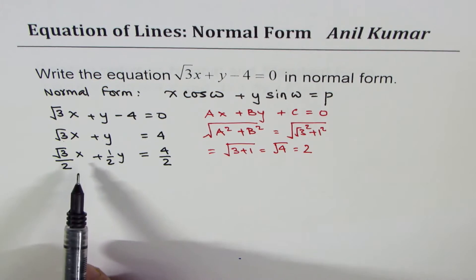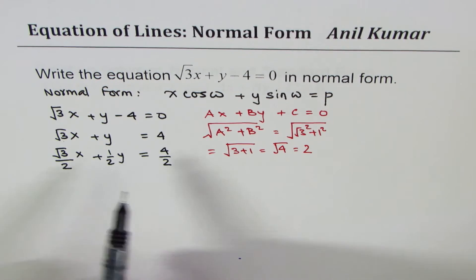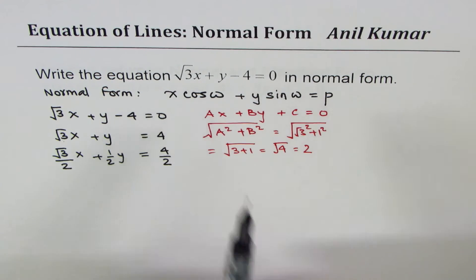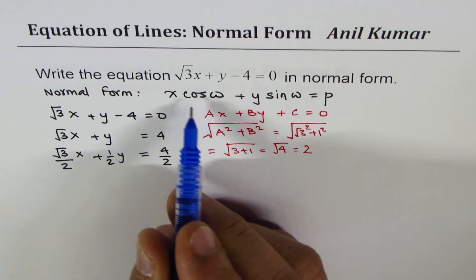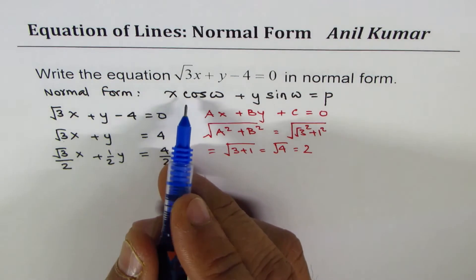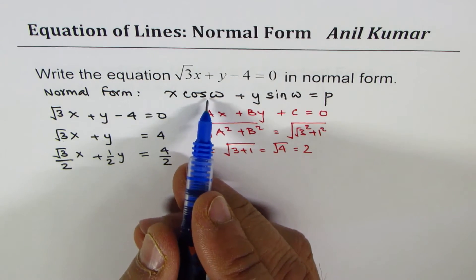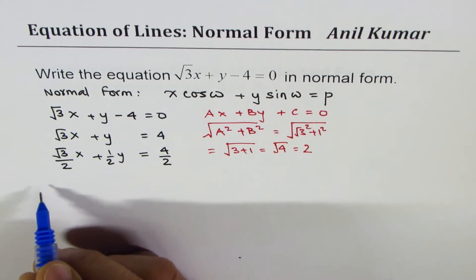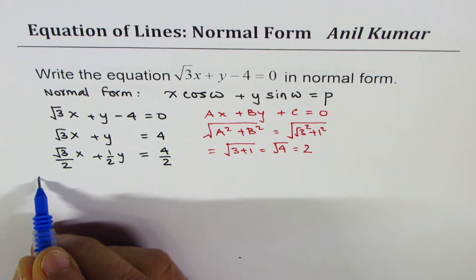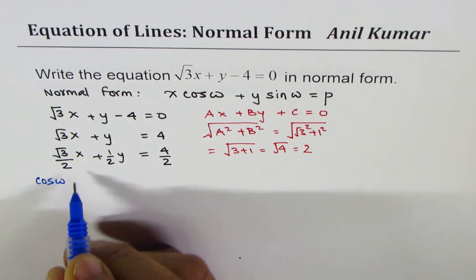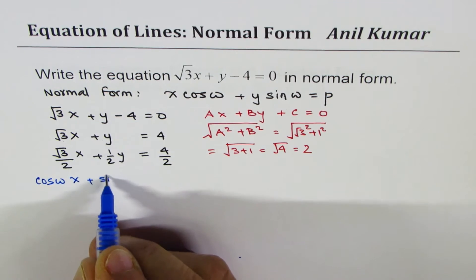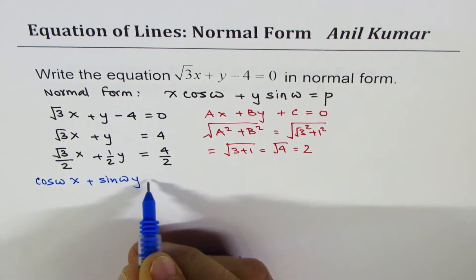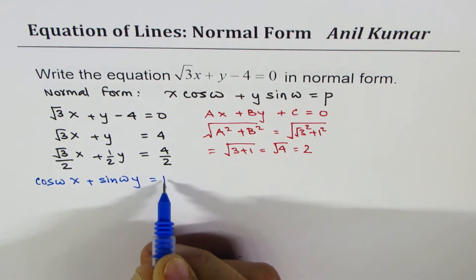Now what you get here can be compared with the normal form. Let's write down the normal form once again: cos ω · x + sin ω · y = p.